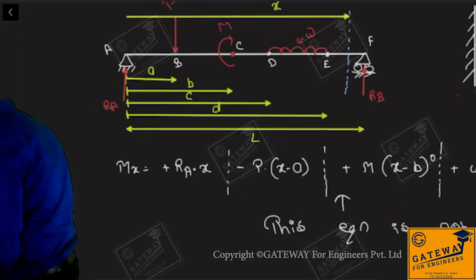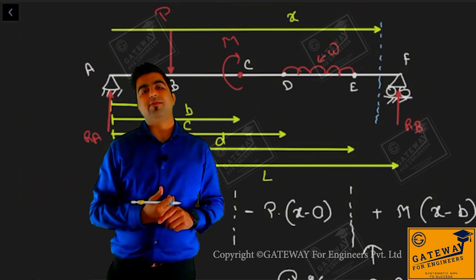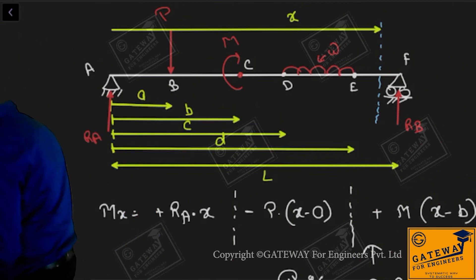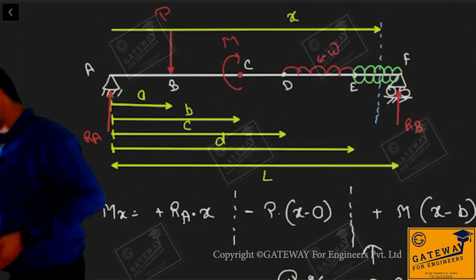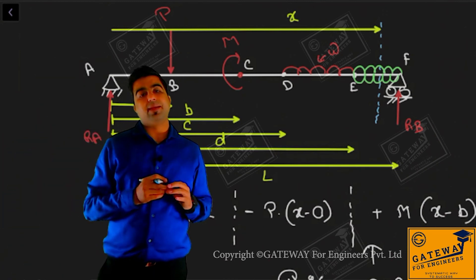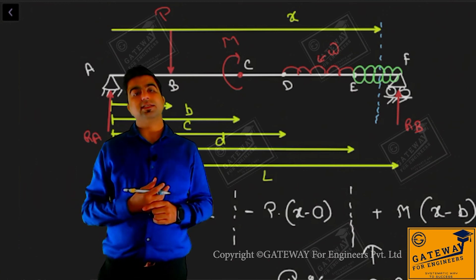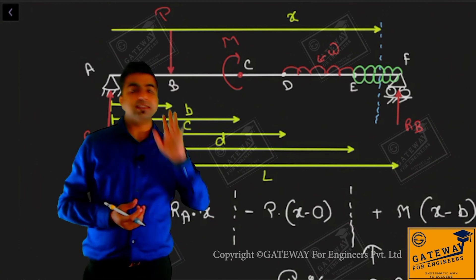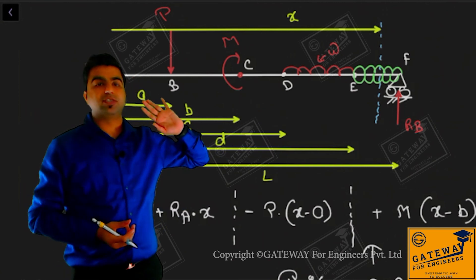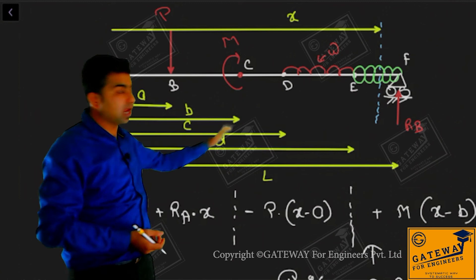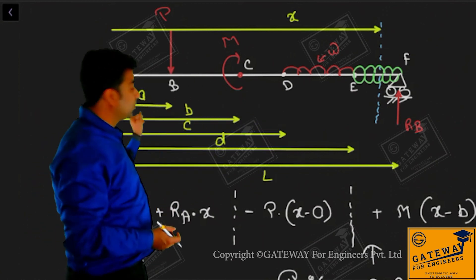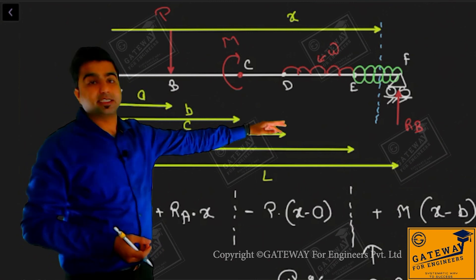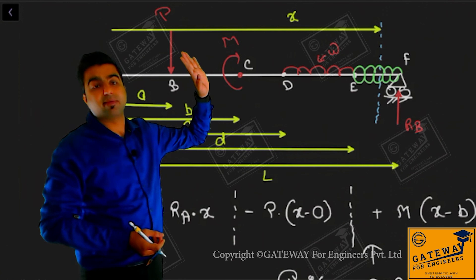To incorporate this correctly, whenever a UDL case comes, what you have to do is add a dummy UDL - wherever the UDL starts, extend it till the end. And against that extended dummy UDL, add an opposite direction UDL in the portion where you extended. If you have taken left to right section, extend the UDL to the right end. If right to left, extend to the left end.